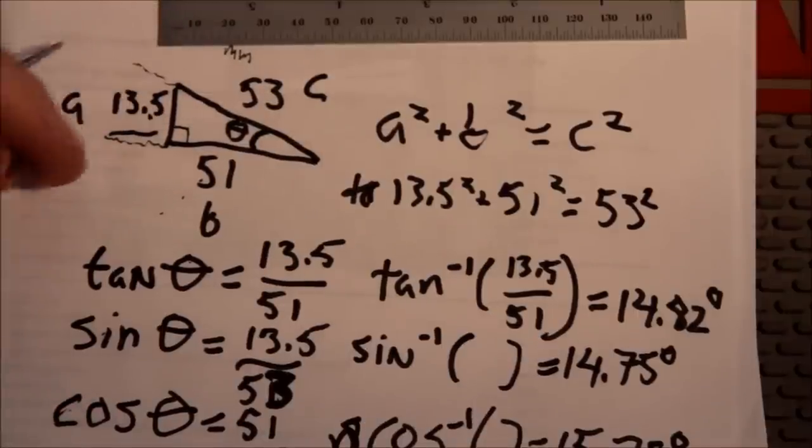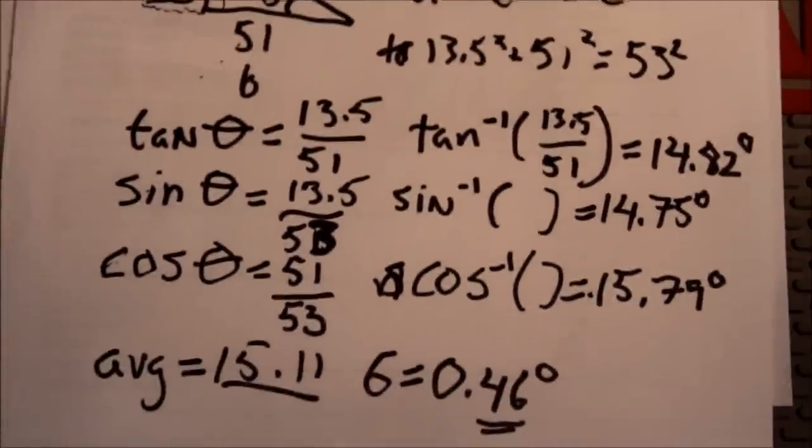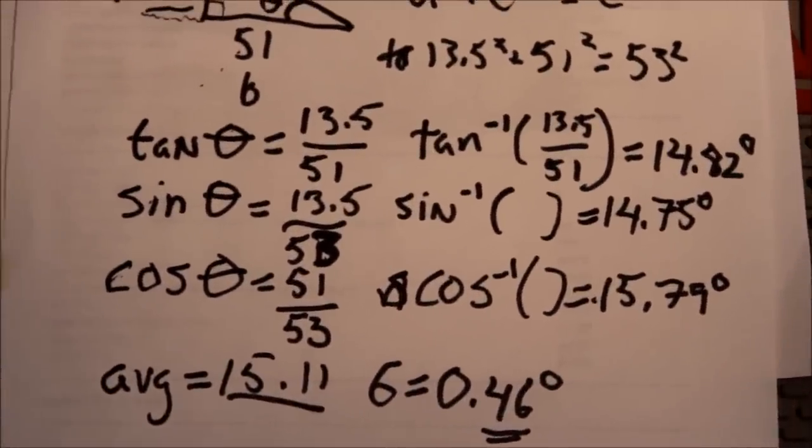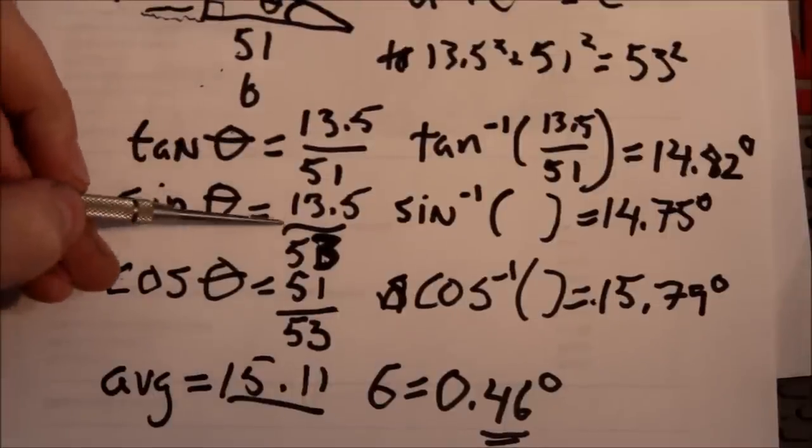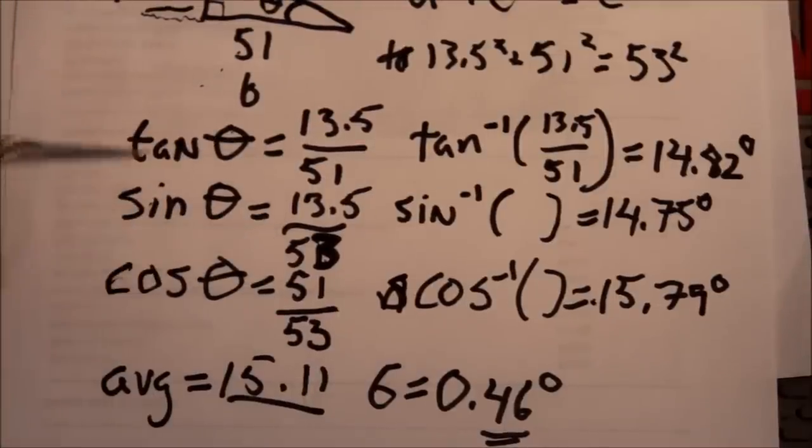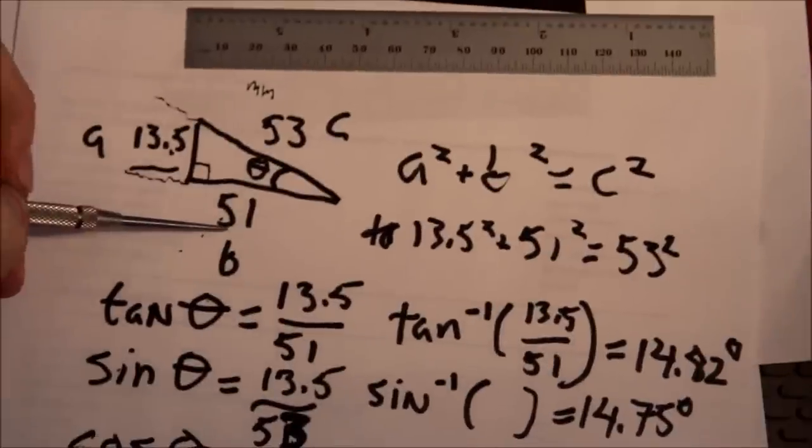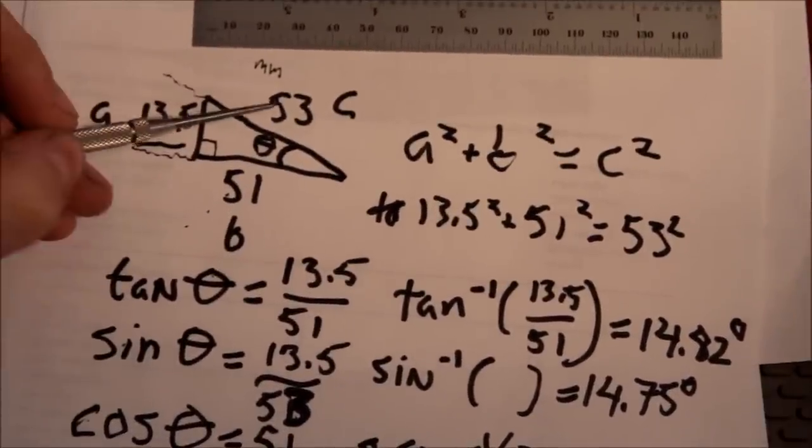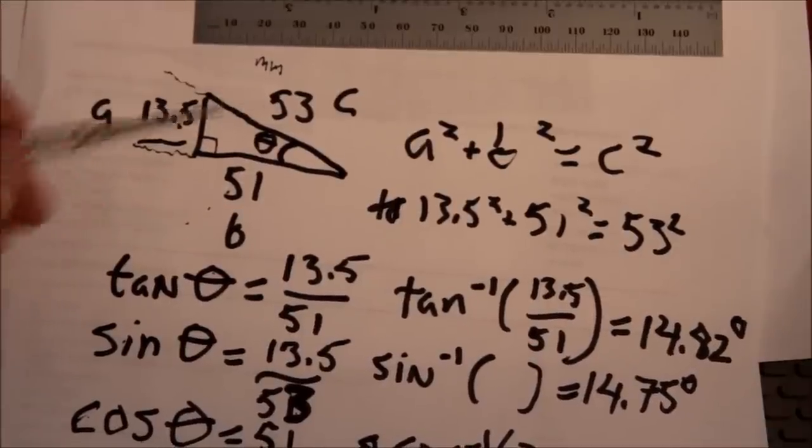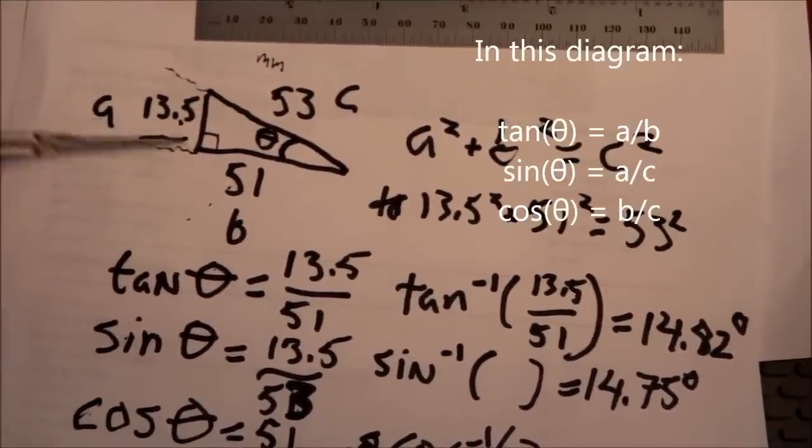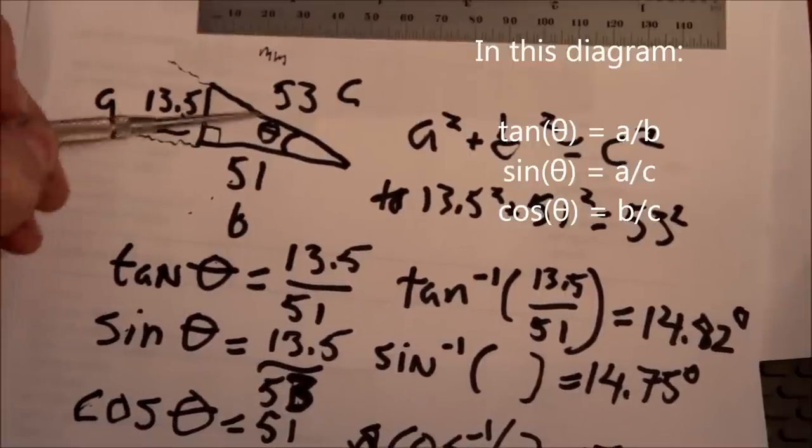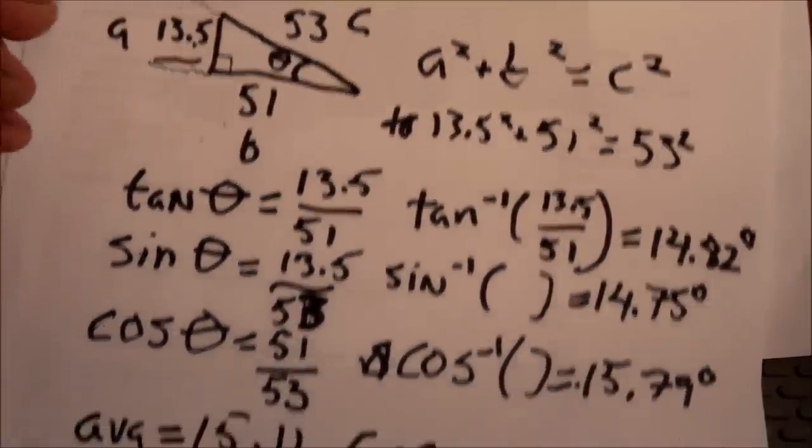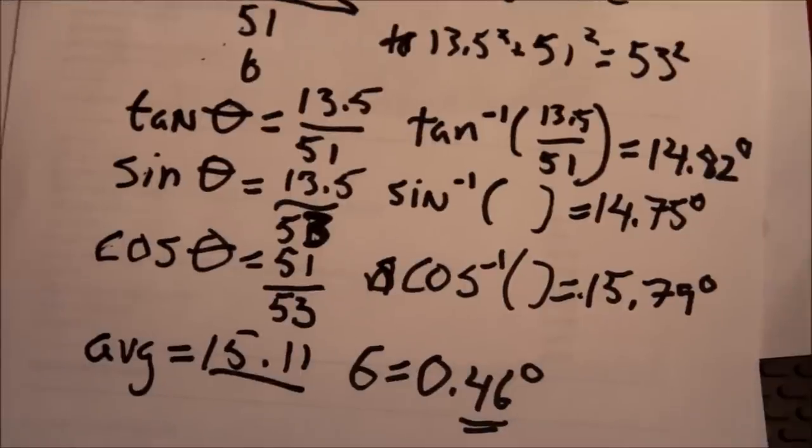So then I want to compute theta. So what I did was I used the three basic trig functions, tan, sine, and cosine. And so these are the ratios that you get. So tan is opposite over adjacent. Sine is opposite over hypotenuse. And cosine is adjacent over hypotenuse. So I want to amortize the error across three different computations and just make sure that everything made sense.